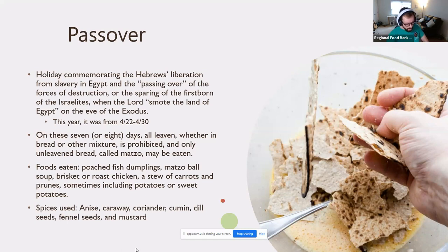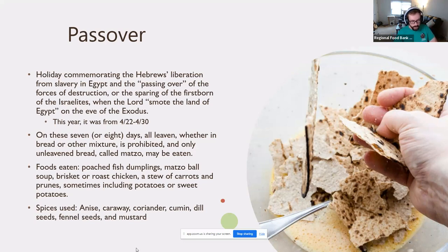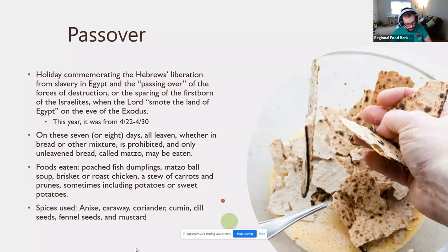During the seven or eight days of Passover, all leavened bread — essentially yeast, whether in bread or other mixtures — is prohibited. Only unleavened bread called matzo is eaten. Popular foods include gefilte fish, dumplings, matzo ball soup, brisket or roast chicken, and a stew of carrots and prunes, sometimes including potatoes or sweet potatoes. Some spices used are anise, caraway, coriander, cumin, dill seeds, fennel seeds, and mustard.